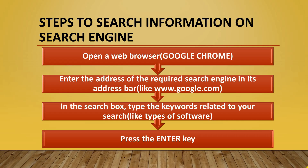The last topic is steps to search information on a search engine. The steps are very easy. First, open a web browser — for example, Google Chrome. Next, enter the address of the required search engine in its address bar, like www.google.com. Then, in the search box, type the keywords related to your search — for example, 'types of software.' Finally, press the Enter key.